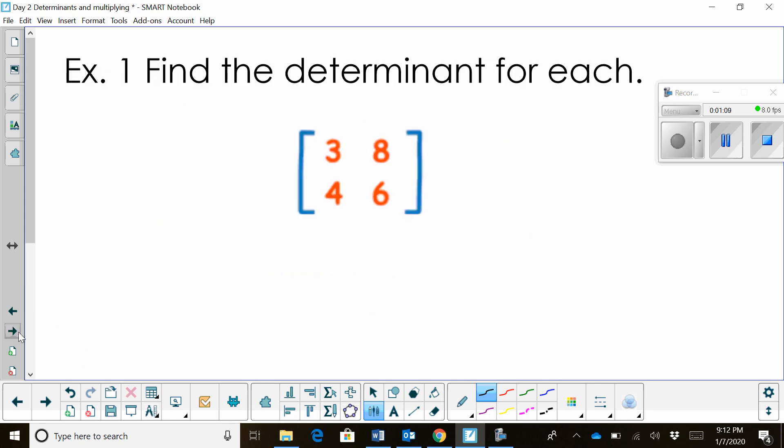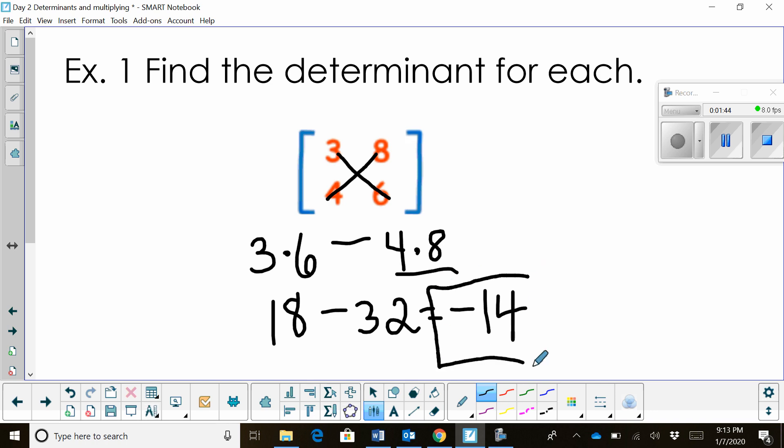So let's try one. Okay, so we have the matrix, again it's a 2x2: 3, 8, 4, 6. We're going to multiply the first diagonal, so 3 times 6, and we're going to subtract the product of the other diagonal which is 4 times 8. So on this one we get 18, and 4 times 8 is 32. So 18 minus 32 is negative 14. And negative 14 is the value of the determinant for this matrix.